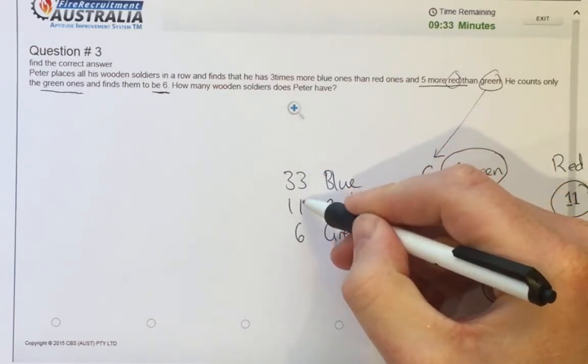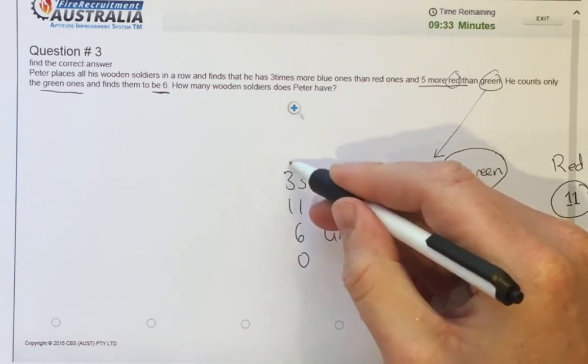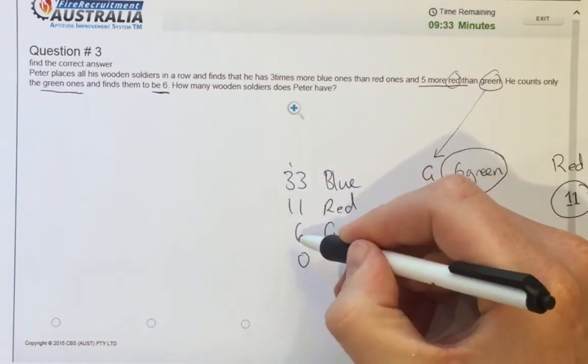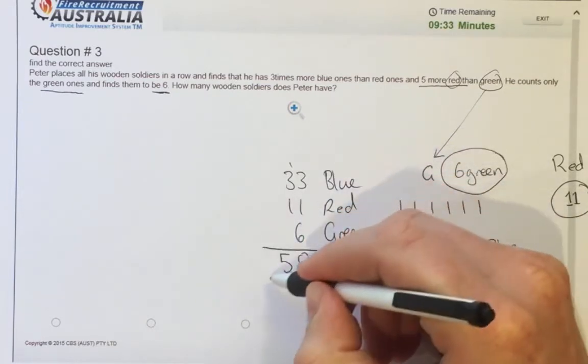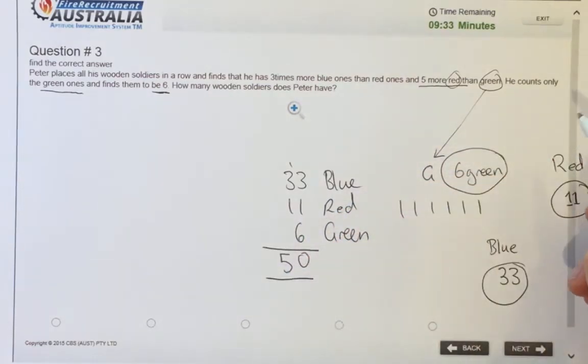So three, one is 10. Carry the one. Four, four, he's got 50 wooden soldiers. So the answer is 50.